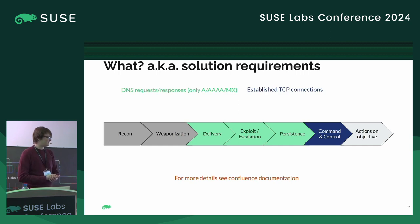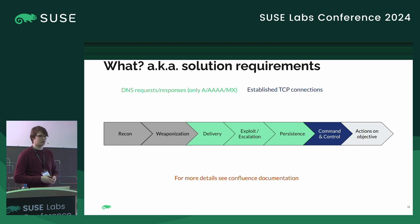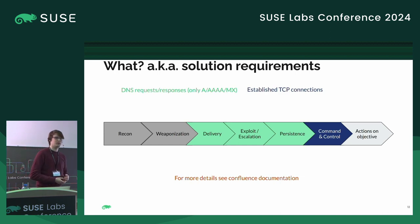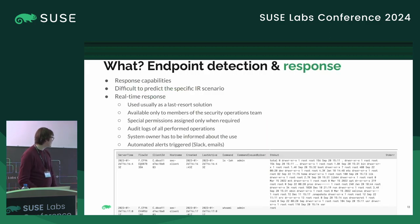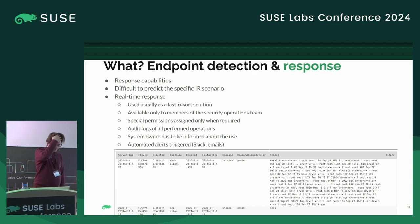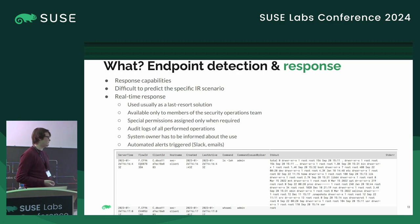All of this is in the project documentation. If you want to see details about exactly what the logs look like and what they are used for, it can all be found on Confluence. It's called Endpoint Detection and Response, so it's only fair to mention the response part. The client that is installed does have response capabilities, which effectively give a means to execute a script on the host.